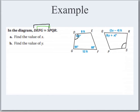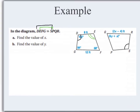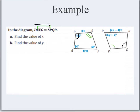Angle E is congruent to angle P. Angle F is congruent to angle Q — put three tick marks. And lastly, the last vertex G has to be congruent to R. So G has to be congruent to R. Make sure you've got those matched up.